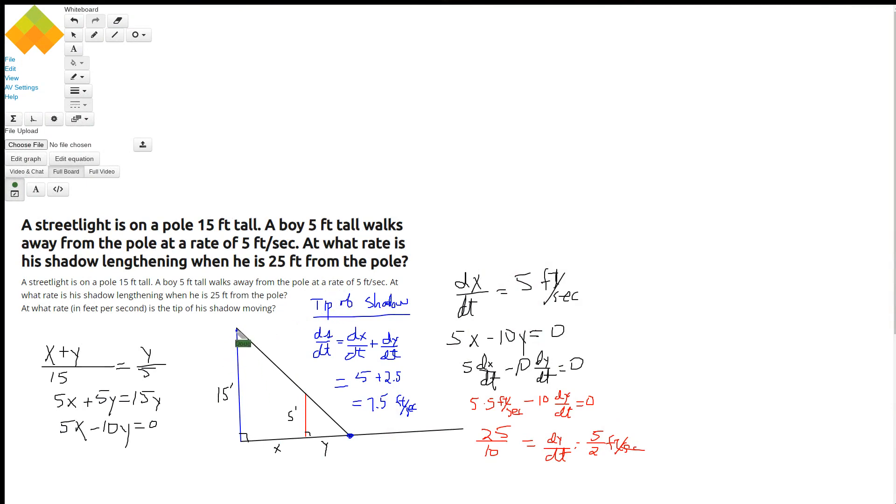Okay, here's a little diagram that depicts the situation. The white pole is 15 feet high, this boy is 5 feet tall and is walking away from the pole. Now we're told that that rate is 5 feet per second, which we represent by dx/dt.